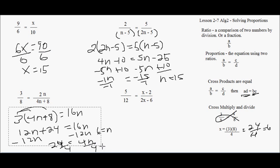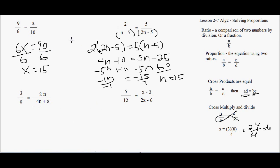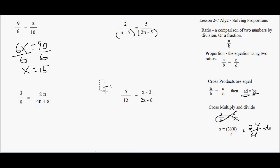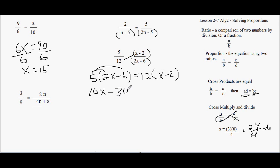Last one. Cross multiply. 5 times 2x minus 6, it has to be a quantity, and then multiply this times this quantity. Equals 12 times x minus 2. Distribute, 10x minus 5 times 6 is 30 equals 12x minus 24.